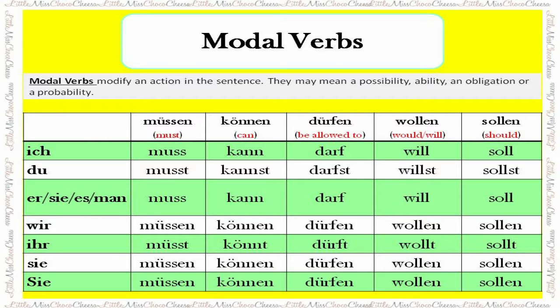'Können' means 'can'. Its conjugations are: kann, kannst, kann, können, könnt, können, können.